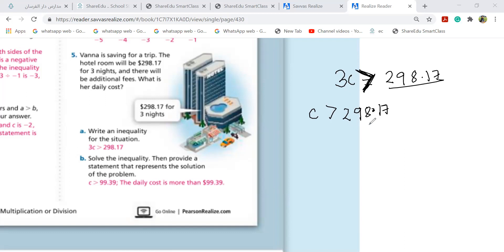Noor, are you there with me? I'm asking you. The relation is multiplication. What happens? Multiplication becomes what? Division. And you're going to divide 298.17. So why were you quiet? I thought you got confused. So when I divide them, I get 99.39 dollars. The daily cost is more than 99.39 dollars.